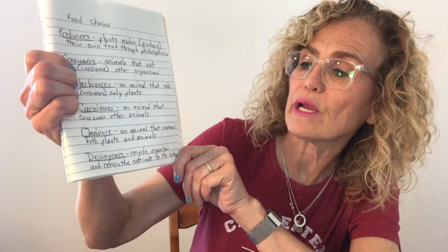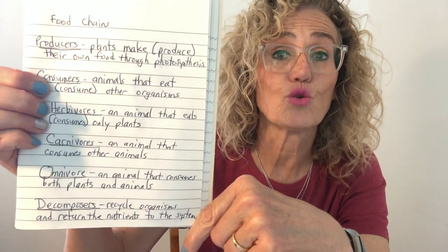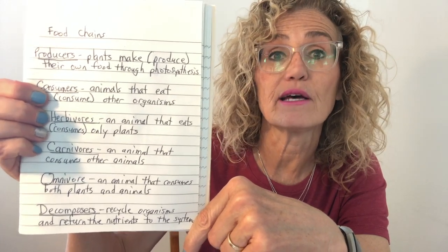Those organisms that don't fall into those categories are called decomposers — they break down matter and energy. They break down dead plants and animals and return them back into the system. Not every animal is eaten by another animal, and not every plant is eaten by an animal. Some of them die, and their matter and energy is recycled into the system. Decomposers are organisms that recycle organisms and return their nutrients to the system — whether that's a soil system or a water system like the ocean.